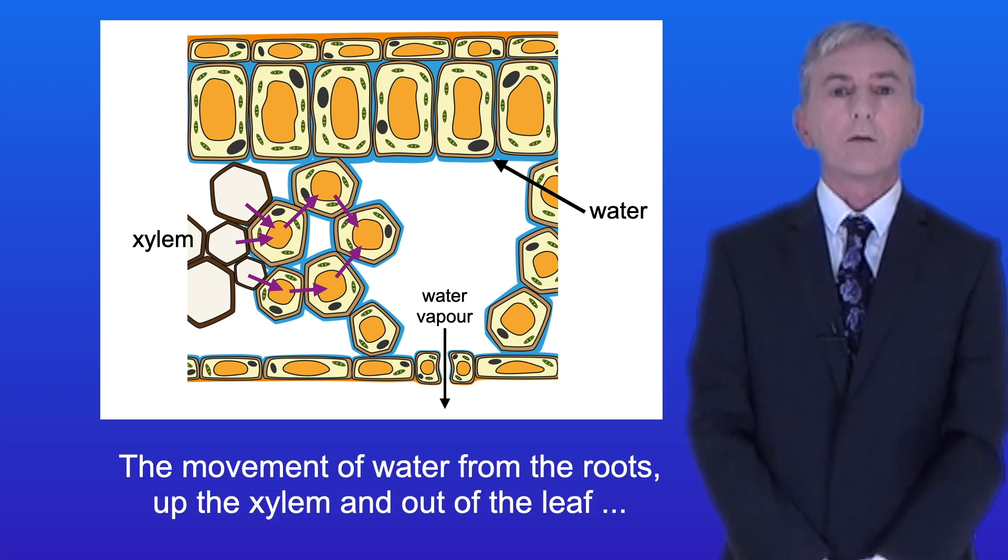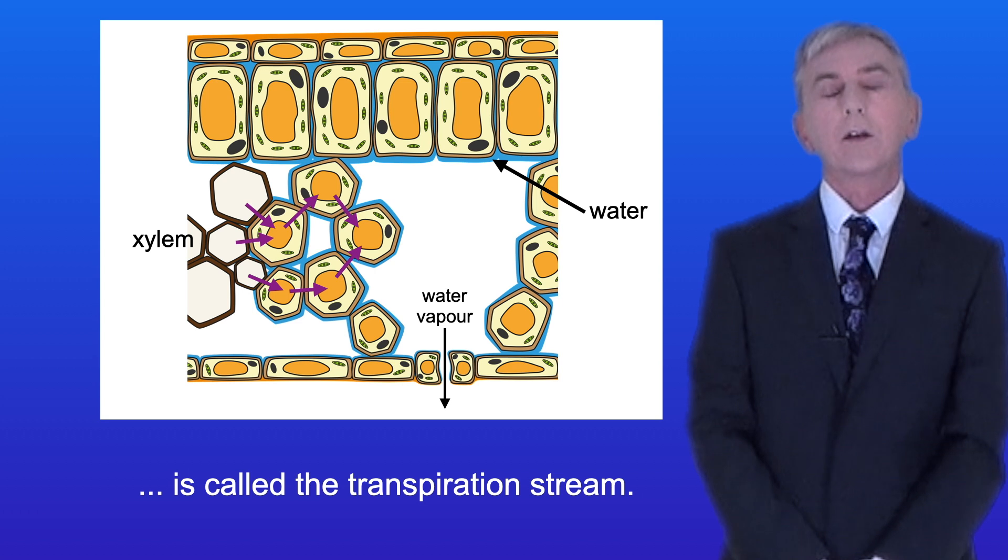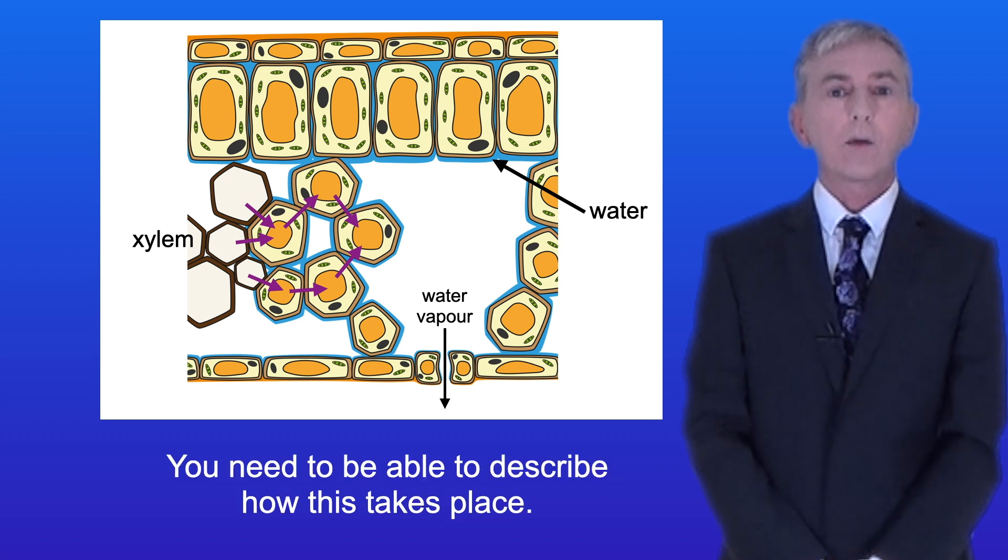The movement of water from the roots up the xylem and out of the leaf is called the transpiration stream and you need to be able to describe how this takes place.